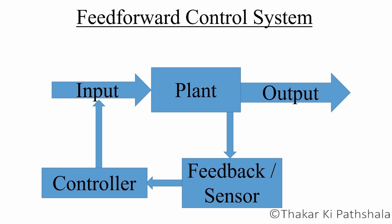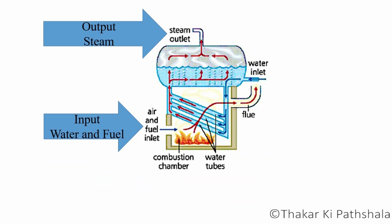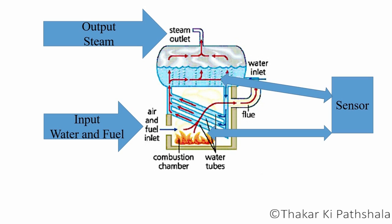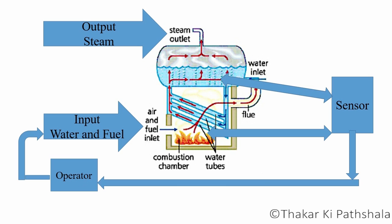Now coming back to our previous example — if we implement a feedforward control system here, we can fit any kind of sensor in the water tank or at the fireplace, which can tell us how much pressure will be generated after some time. So the operator can predict the error and fix it before the generation of it.